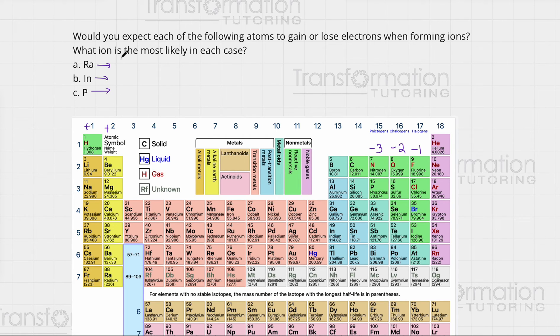Ra is in group 2, so it has a plus 2 charge. In is in group 13. I did not say what this charge is, but generally this is a plus 3 charge. They want to lose three electrons, so this is going to be a plus 3 charge. Phosphorus has a minus 3 charge, so Ra is going to lose two electrons to become 2 plus.